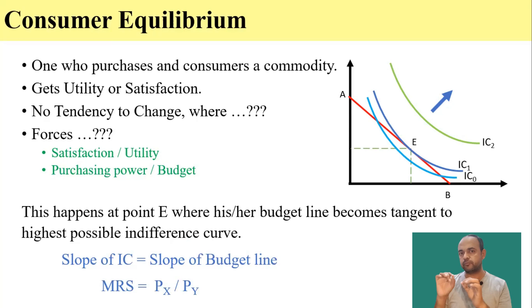And we know the point at which two curves are tangent to each other is a point where the slope of both of these curves, that is the slope of indifference curve and the slope of budget line are equal. I have recorded a detailed lecture on indifference curve,